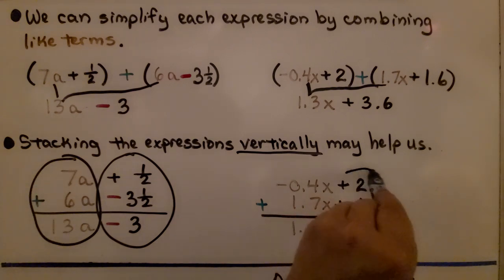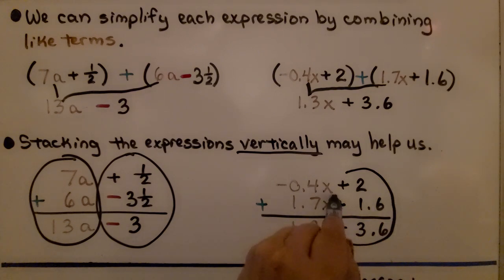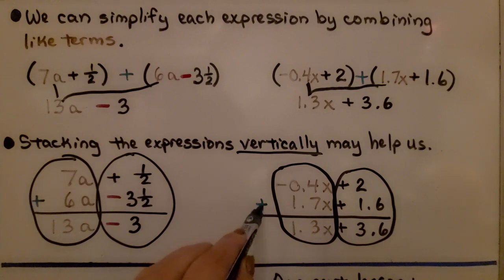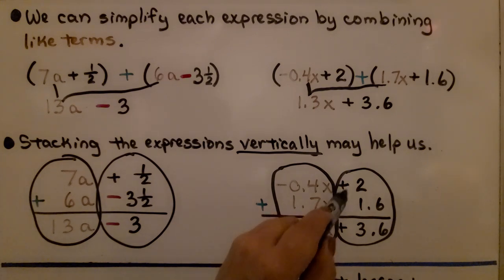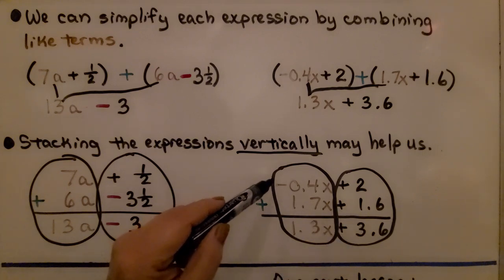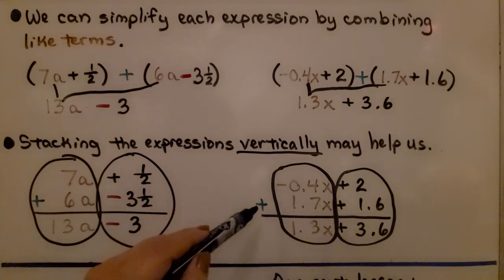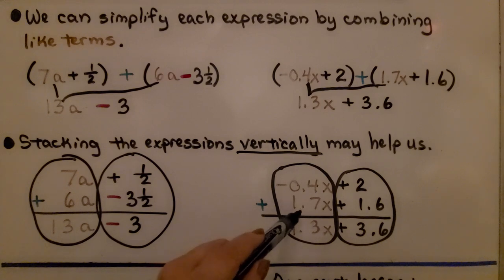For this one, we do this side and then we do this side. And we're adding. We have a positive 2 plus a positive 1 and 6 tenths. That gives us a positive 3 and 6 tenths. Notice that the sign goes with the term. Here we have a negative 4 tenths x plus a positive 1 and 7 tenths x. That's going to give us a positive 1 and 3 tenths x.